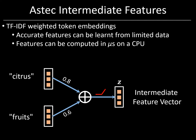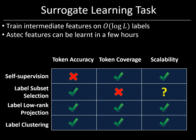Because of their low capacity, these Aztec features could be learnt accurately from even the very limited training data available per token in these short text applications. Similarly, because of their simplicity, these Aztec features could be computed in microseconds on a CPU and could be used to process billions of web pages per day. Once the feature architecture has been finalized, we need to train the features on an accurate and scalable surrogate task. For example, we could take the original L labels, cluster them into order log L meta-label clusters, and then train the features by predicting the meta labels for each training point rather than the original labels. This was found to work well across all our short text datasets, and Aztec features could be learnt in a few hours on a single GPU across datasets including those with millions of training points and labels.